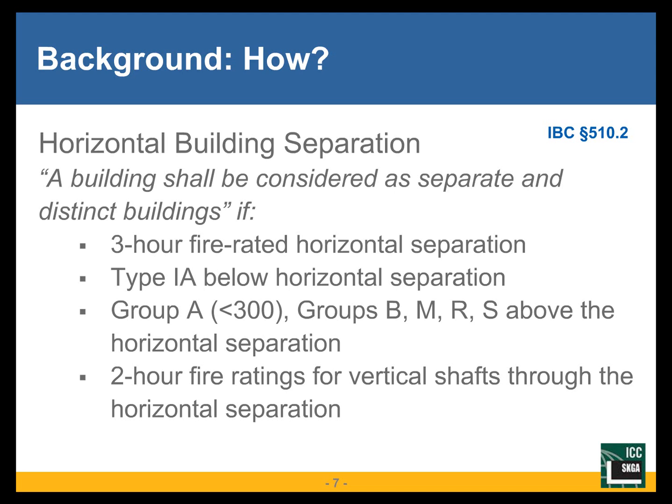Anything below the podium needs to be Type 1A construction. Anything above that, the construction type is not limited, but occupancy is. It can be Assembly Group A with fewer than 300 occupants, or occupancy groups B (business), M (mercantile), R (residential), or S (storage).